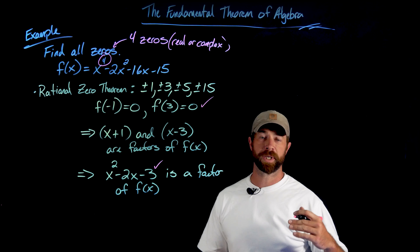I calculated these and found that negative one and three are zeros of this function. Importantly, that means the factors related to these zeros are factors of f of x — so x plus one and x minus three are associated factors of f of x. When I multiply them together, x squared minus 2x minus 3 is a factor of f of x. So far I've found two of the four zeros, so I know I'm halfway there.